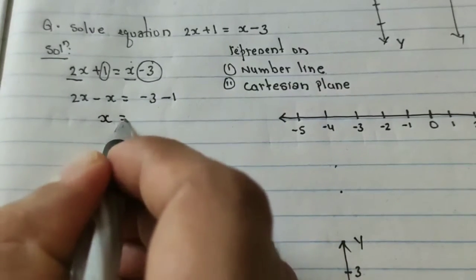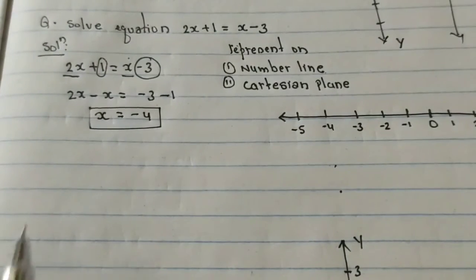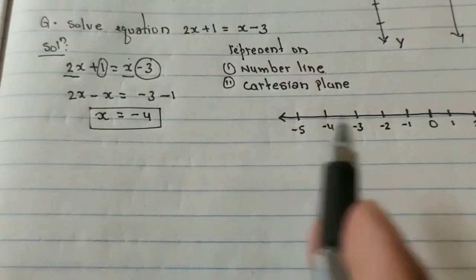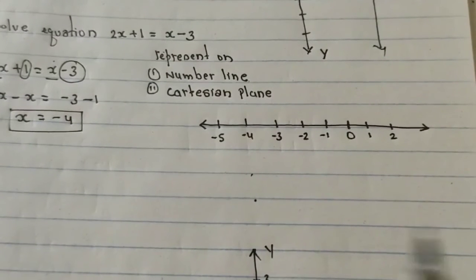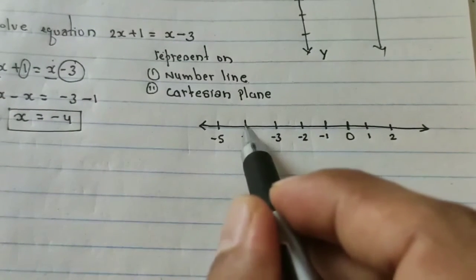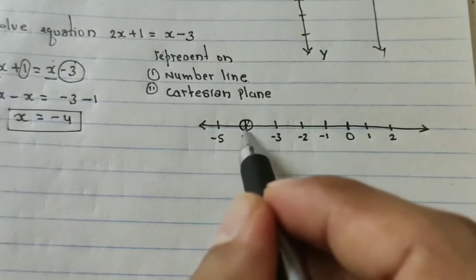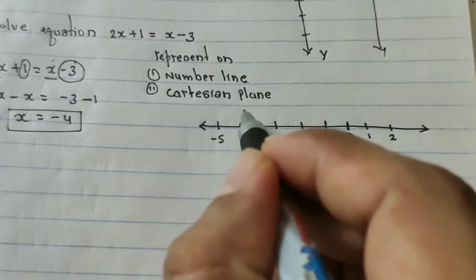So here 2x - x = -3 - 1. Now here I will get only x = -4. So this is the value of x, -4. So on the number line I can directly place here x = -4.